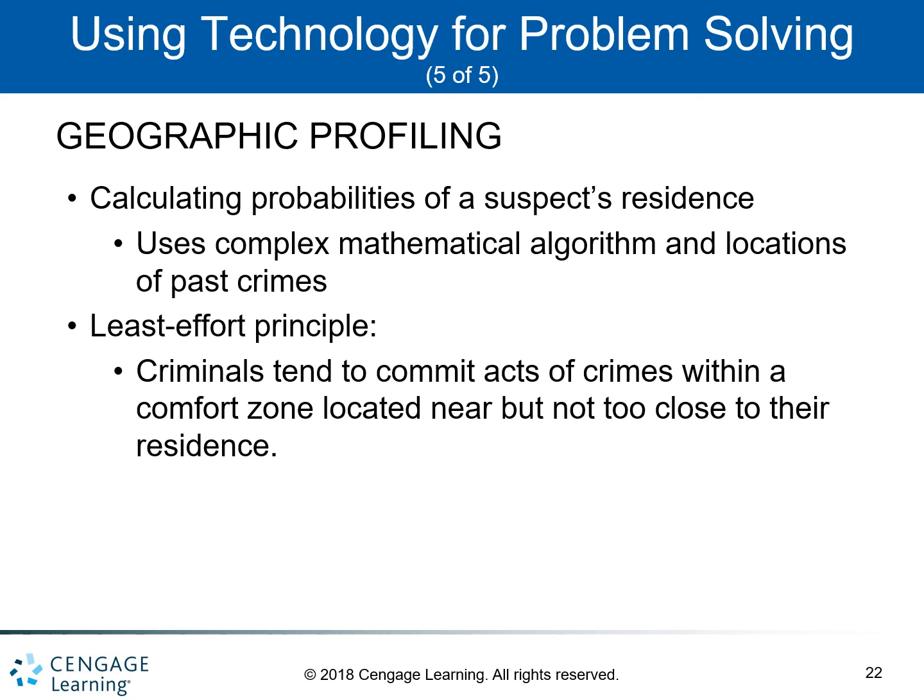With geographic profiling, this takes the locations of past crimes and, using a complex mathematical algorithm, calculates probabilities of a suspect's residence. A similar approach is the least effort principle, which proposes that criminals tend to commit crimes within a comfort zone that is located near but not too close to their residence.